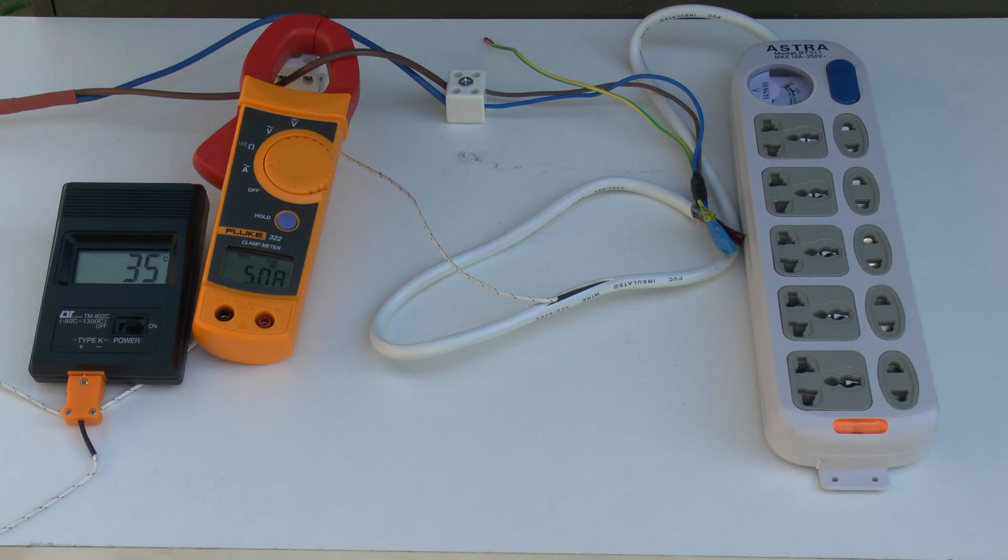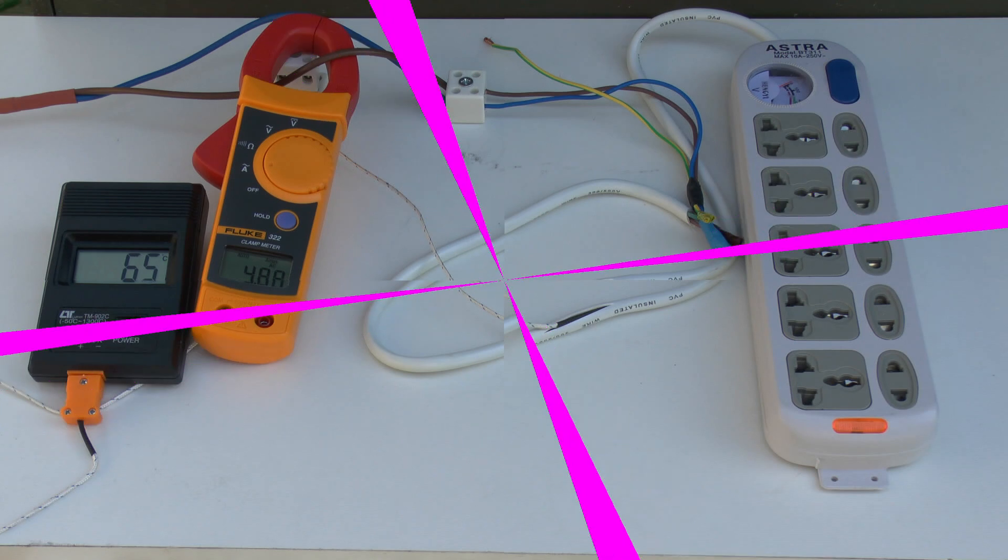We'll leave that running for a few moments to see where the temperature gets to. Okay, that's now holding at about 66 celsius. Let's increase the current to say 8 amps which is still below the rating of the device.